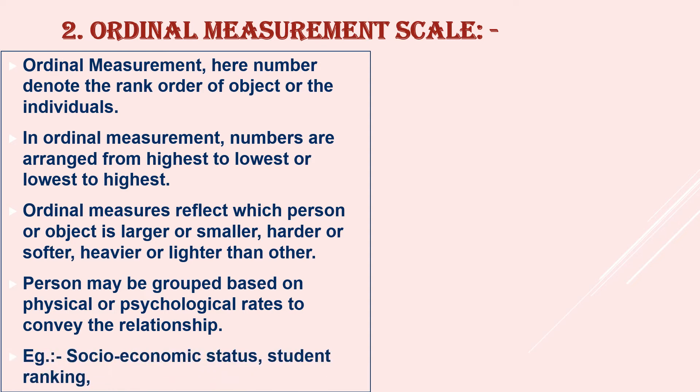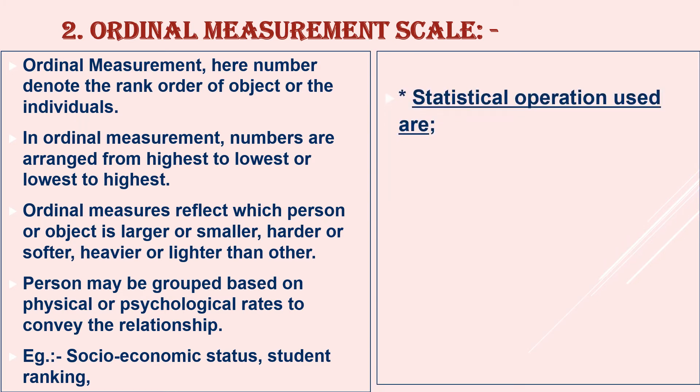Person may be grouped based on physical or psychological rate to convey the relationship. The examples of ordinal data are socioeconomic status or even student rankings. The statistical operations possible with ordinal data includes median, percentile and rank correlation.